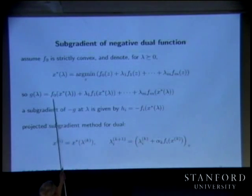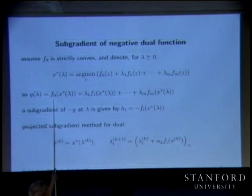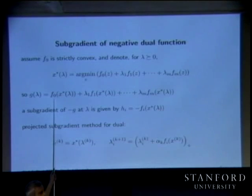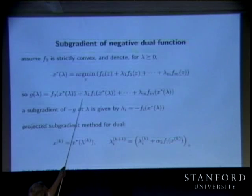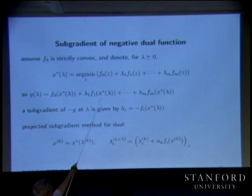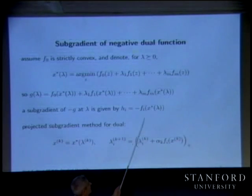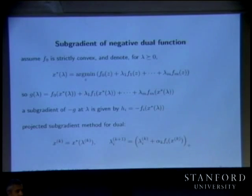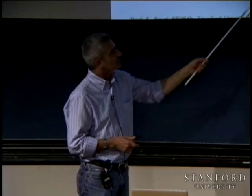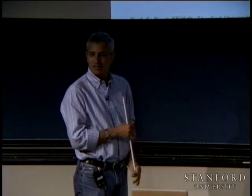You form this thing, and then you ask: what is the subgradient of this with respect to lambda? That's an affine function, so the subgradient is simply this term. Modulo minus signs, I think this one's correct, and we'll update it silently if not.